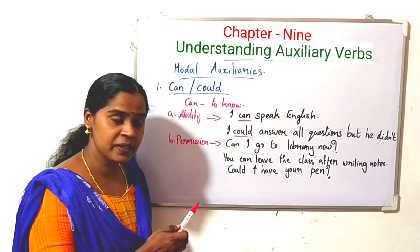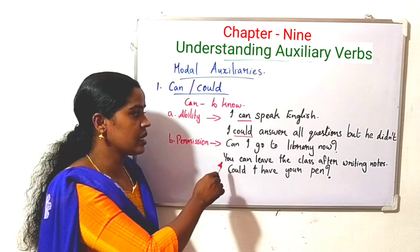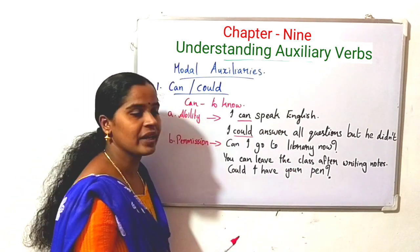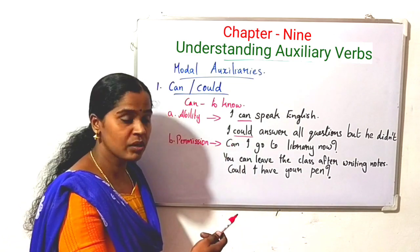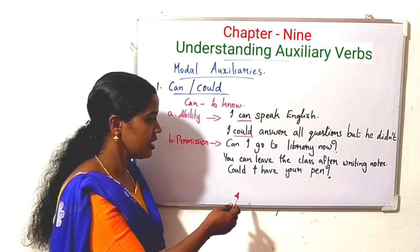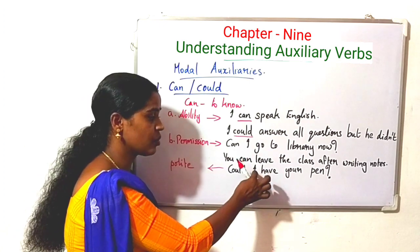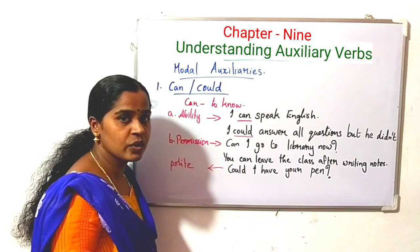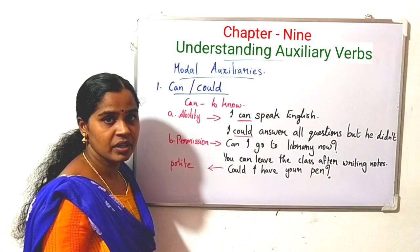Can and could can also be used to express permission. For example: 'Can I go to the library?' — this is asking permission in the present tense. 'You can leave the class after writing notes' — this is giving permission. Then: 'Could I have your pen?' — here it is not referring to any tense, but this is a polite way of asking permission. Could is more polite than can when making requests.